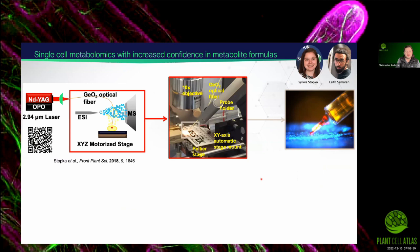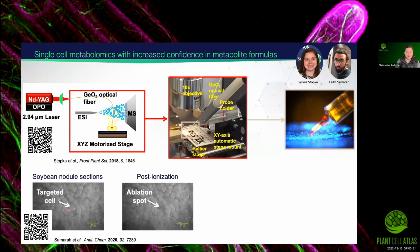This is work with Sylvia, and Laith was also able to work with us — both were grad students in Akush's group at the time. What we wanted to do was move this work into single cell metabolomics. The first thing we did was use a fiber-based coupling system where we coupled our laser into a fiber, etched the tip, and could basically point at the cell we wanted and ablate just that cell. So this is a targeted approach where you can see the soybean root nodule infected cell and ablate it to get single cell data.